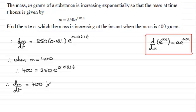So it's just going to be 400 multiplied by 0.021, which is really nice, as I say, so I don't have to go and find t.